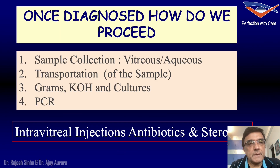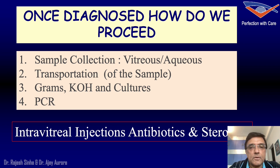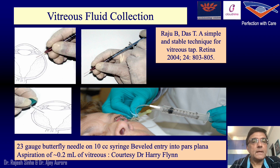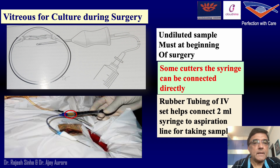Once you have diagnosed a patient with possible endophthalmitis, you can directly refer to your retina colleague, or you can collect the sample yourself. The sample could be aqueous or vitreous. Transport it correctly, and subject it to gram stain, KOH stain, bacterial and fungal culture, and PCR analysis. Vitreous samples can be taken by a 26-gauge needle or a scalp vein, where the material entering the tubing is sent for culture and sensitivity. During surgery, they are taken by a syringe attached to one of the ports of the vitrector so that initial suction collects the sample.